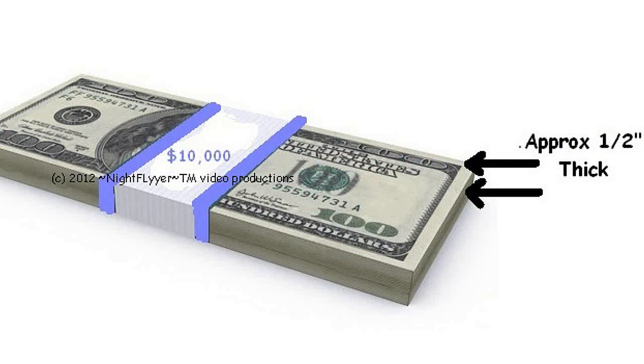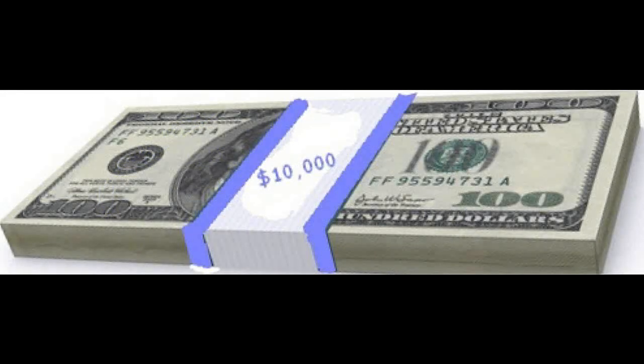Let's first start with a million dollars. A stack of 100 hundred dollar bills is a little less than half an inch thick, and that adds up to ten thousand dollars.